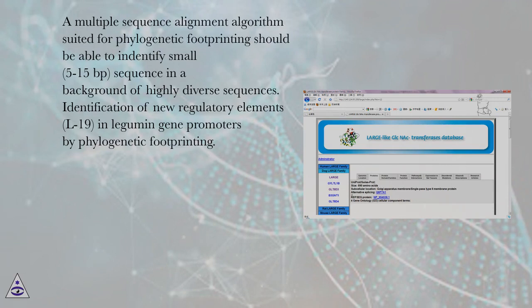A multiple sequence alignment algorithm suited for phylogenetic footprinting should be able to identify small — 5 to 15 bp — sequences in a background of highly diverse sequences.